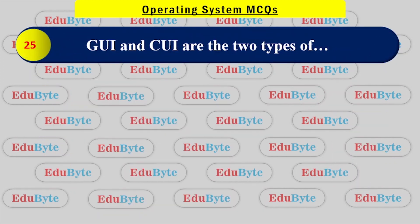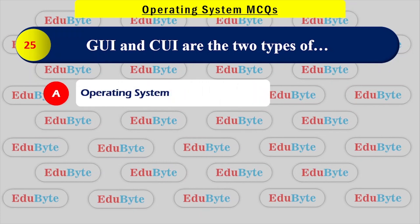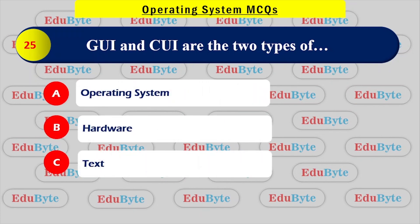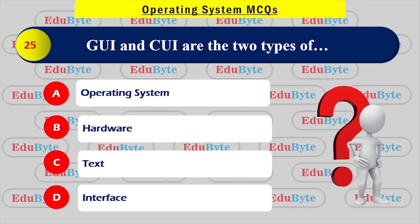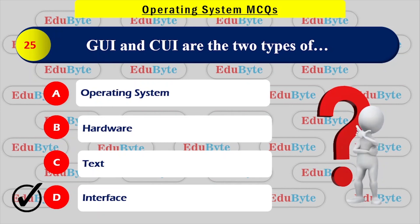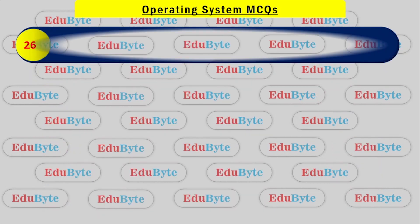GUI and CUI are two types of what? Options: product, operating system, hardware, interface. The correct answer is interface — GUI (Graphical User Interface) and CUI (Character User Interface) are two types of user interface.